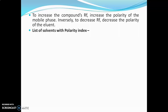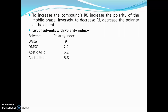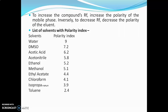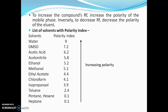Here is a list of solvents with their polarity index. Water has a polarity index of 9; DMSO 7.2; acetic acid 6.2; acetonitrile 5.8 — these are generally known as highly polar solvents. Next: ethanol 5.2; methanol 5.1; ethyl acetate 4.4; chloroform 4.1 — these are moderately polar solvents. Isopropanol 3.9; toluene 2.4; and pentane, hexane, heptane have a polarity index of 0.1 — these are known as non-polar solvents.